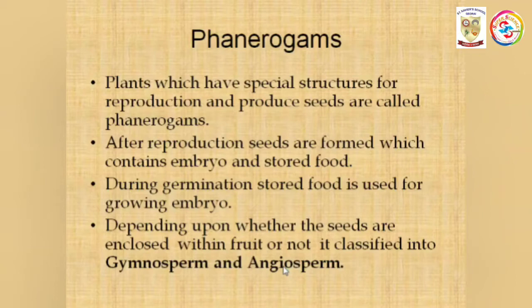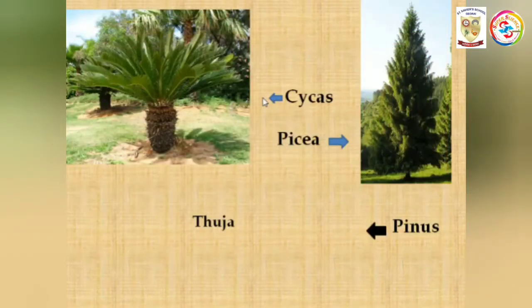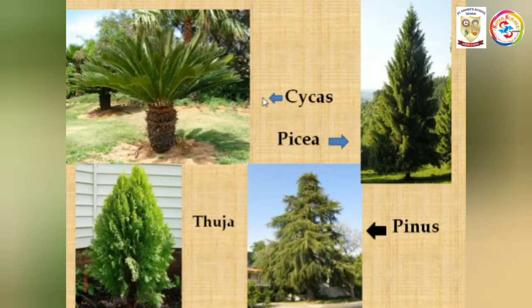Now let us see division one: gymnosperms. Gymnosperms are mostly evergreen. Looking at the picture, you can observe examples such as Cycas, the Christmas tree (Thuja), Morpankhi, Pinus, and Deodar. These are all examples of gymnosperm plants.